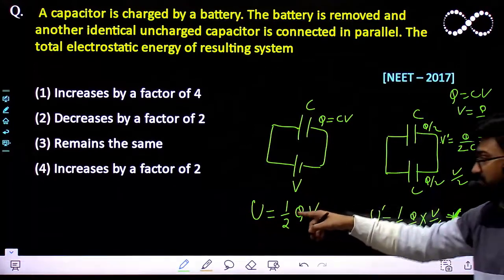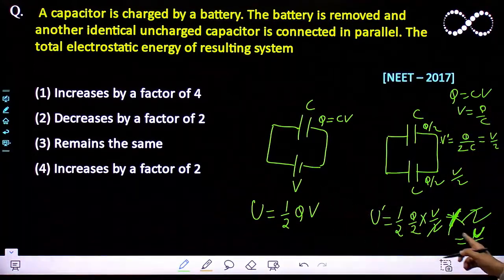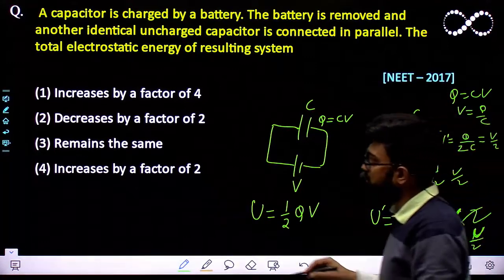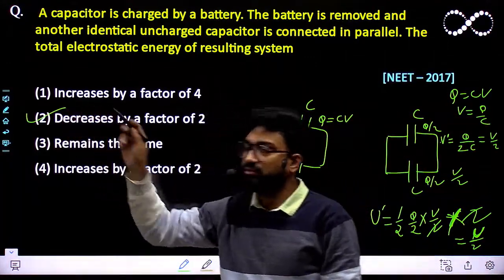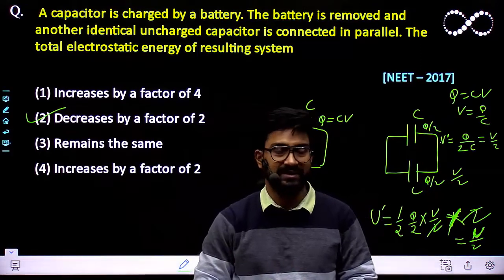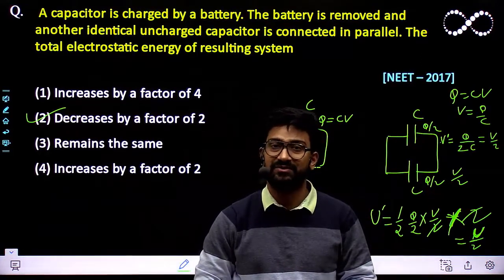What do you think? Because 1/2 QV is the initial potential energy, it would be half times the initial. So it will decrease by a factor of 2. So option 2 would be the correct answer. I hope this question is clear to everyone. Thank you.